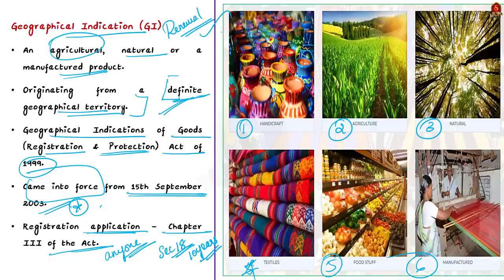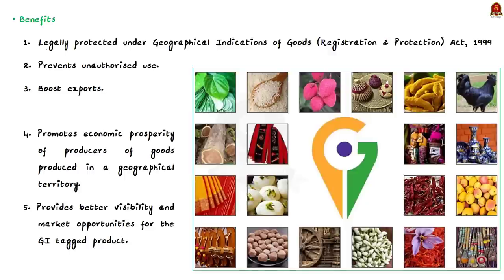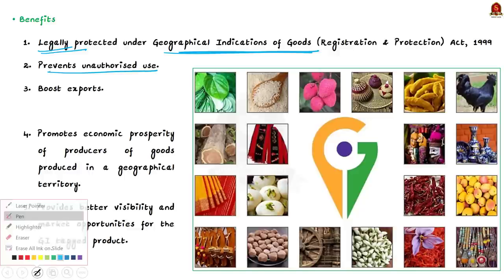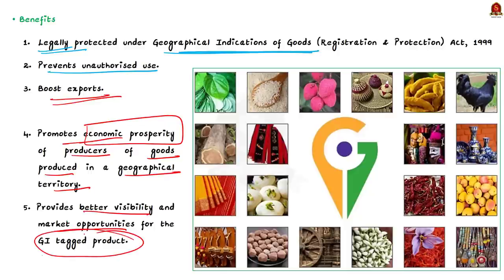A GI-tagged product will be of a given quality, reputation, or other characteristics essentially attributable to its geographical origin. Once a product receives a GI tag, there are several benefits. First, it conveys legal protection to geographical indications in India. Second, it prevents unauthorized use of a registered geographical indication by others. Third, legal protection boosts exports, thus promoting economic prosperity of producers. It also provides better visibility and market opportunities for the GI-tagged product.